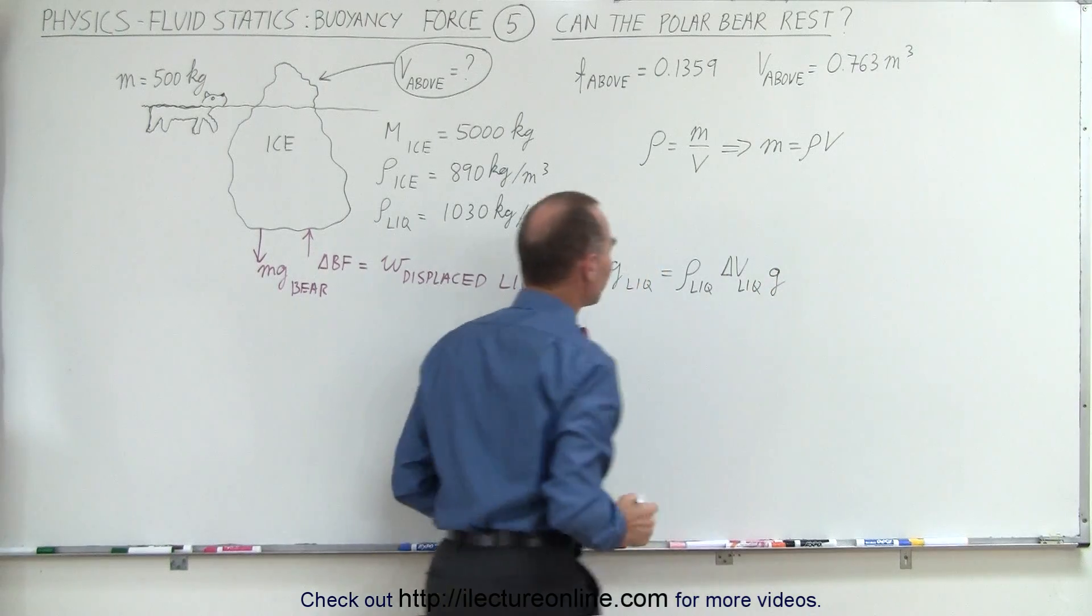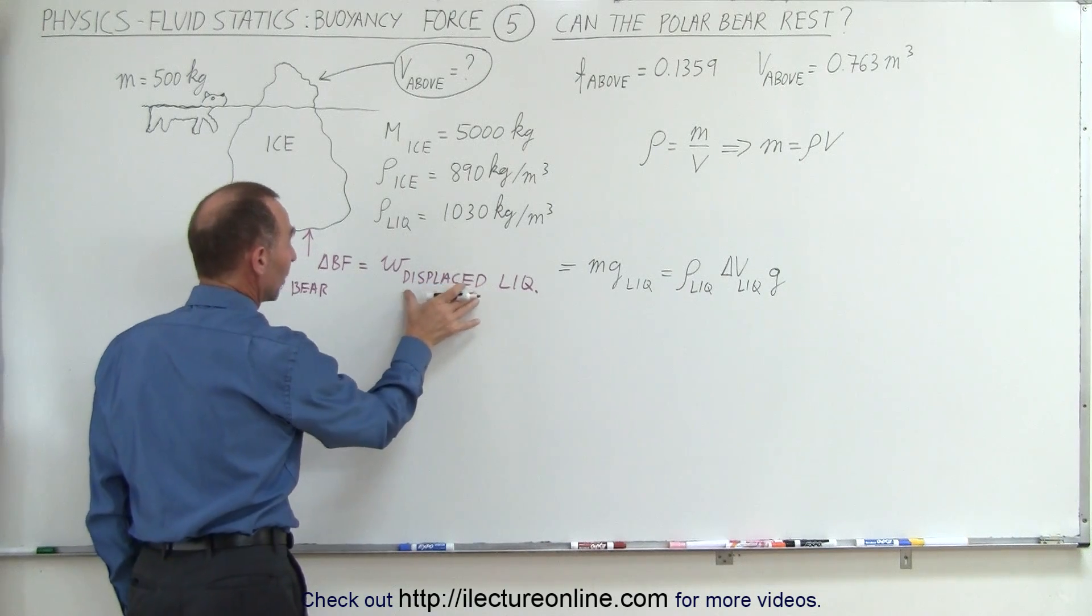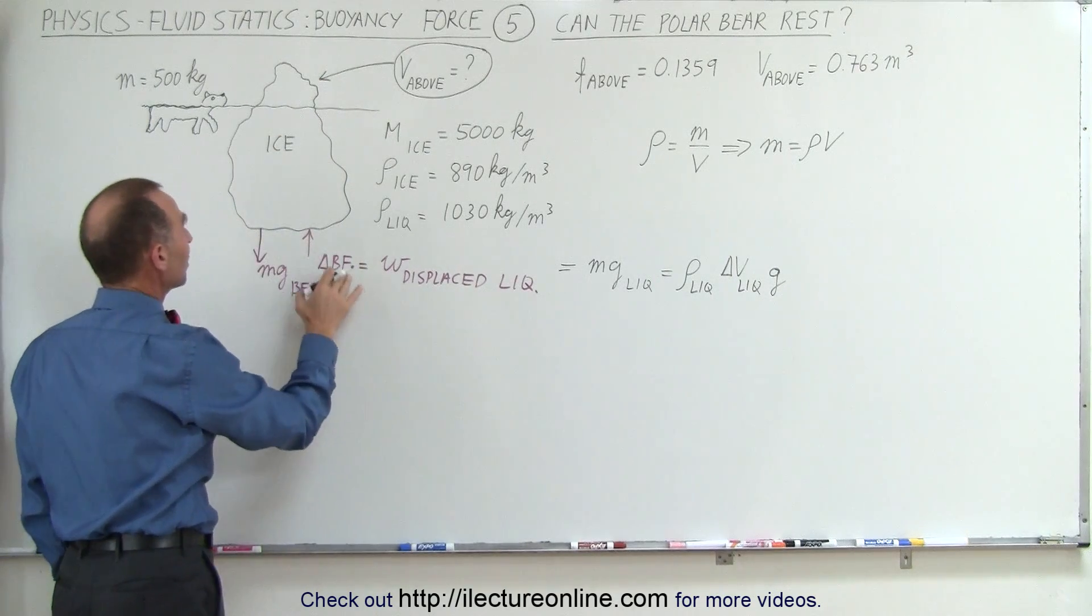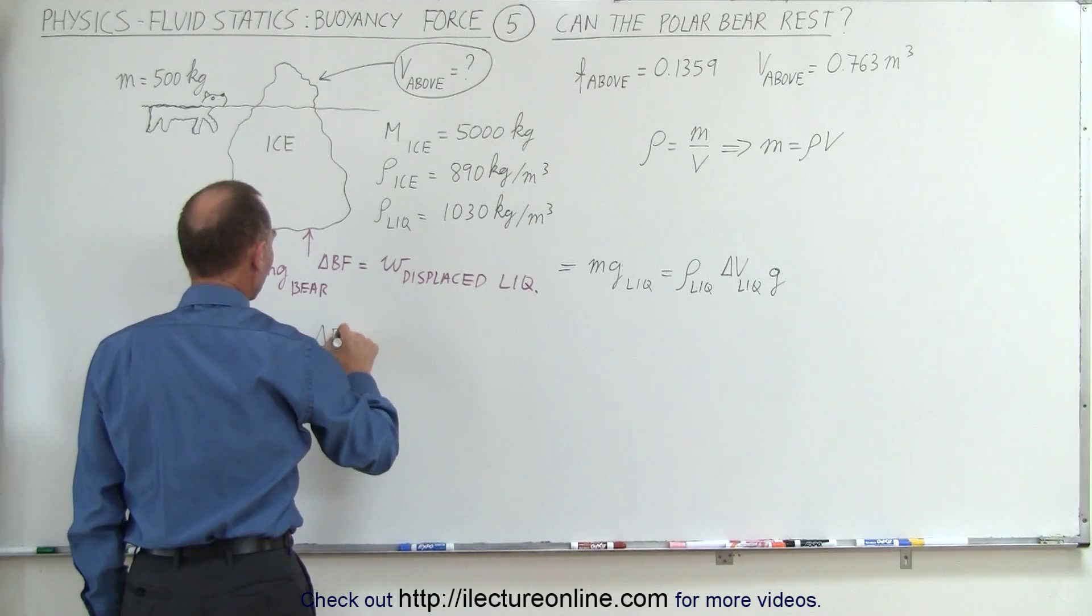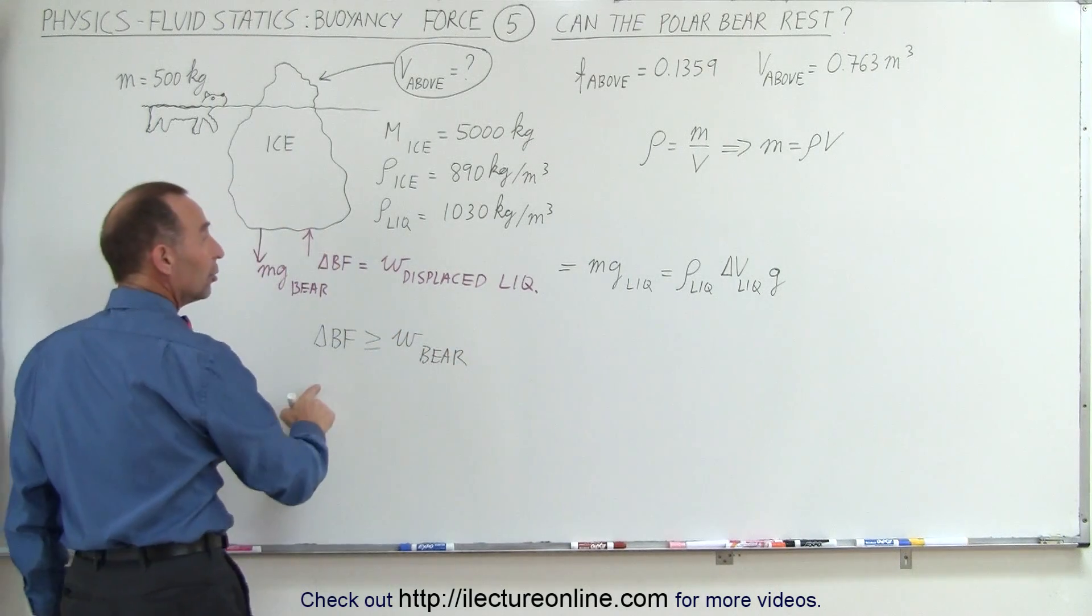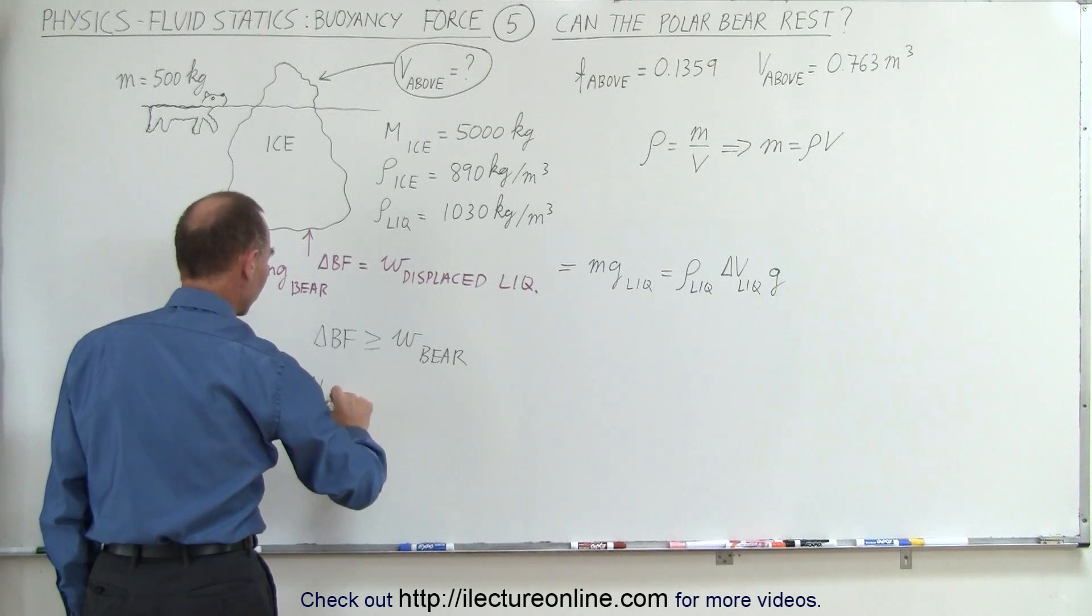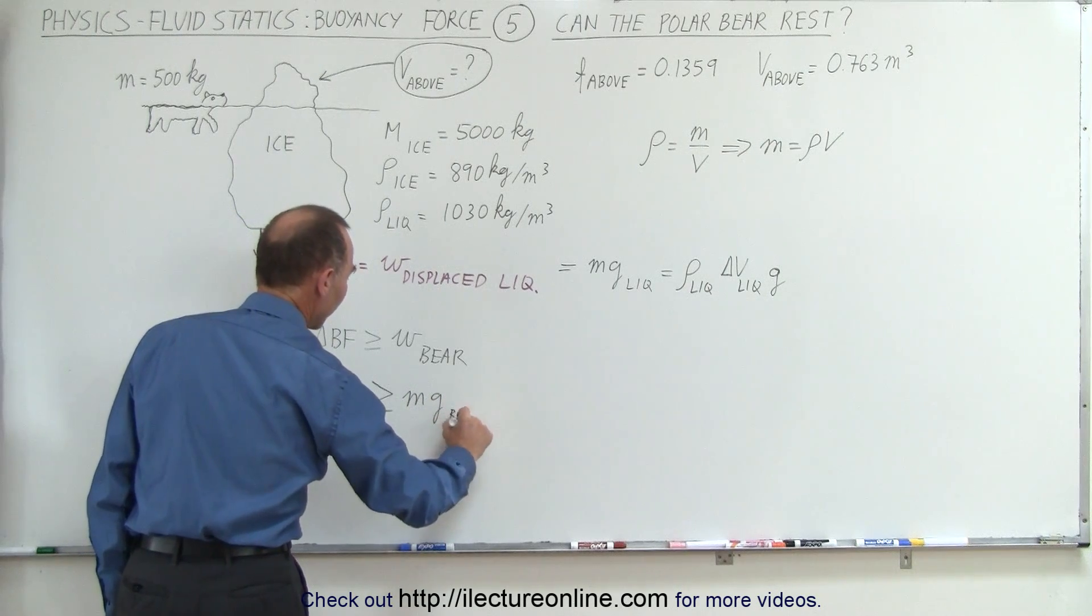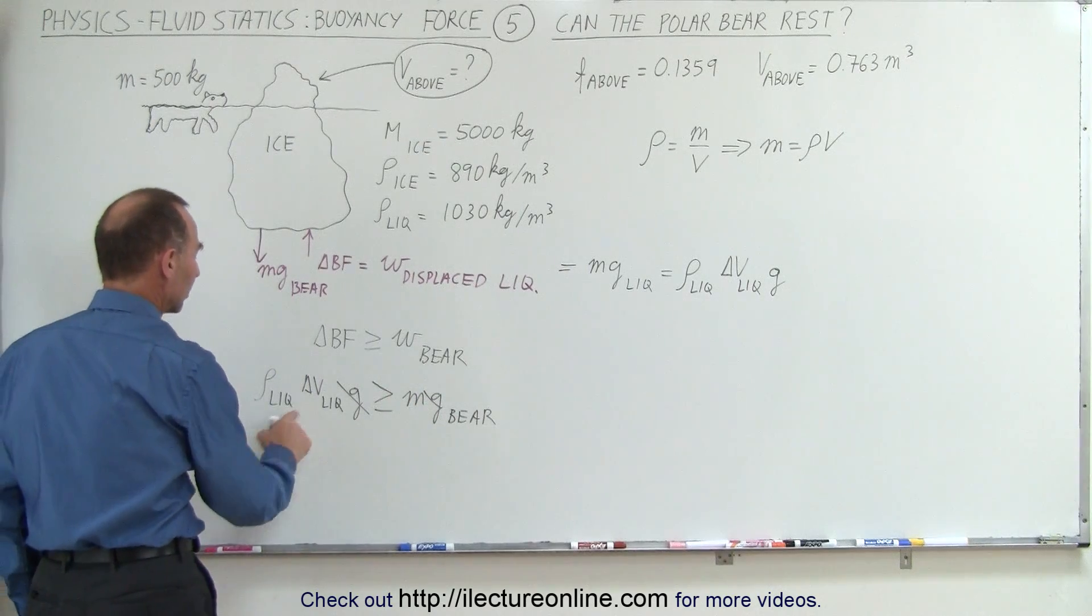And of course, for the bear to stay above the water, you want the weight of the displaced liquid, which is equal to the additional buoyancy force offered up by this additional piece of ice, to be greater than the weight of the bear, or at least equal. So you want the additional buoyancy force to be greater than or equal to the weight of the bear, which means that you want the density of the liquid times the additional volume of the displaced liquid times g to be greater than or equal to the m times g of the bear. Again, you can see that the g's cancel out on both sides of the equation, so you want the product of these two to be greater than the mass of the bear.